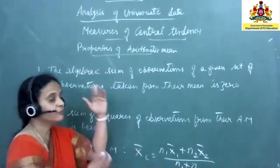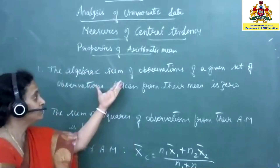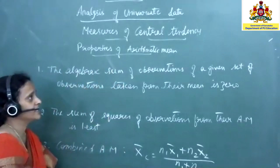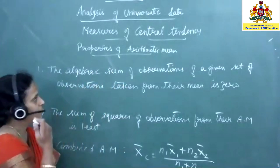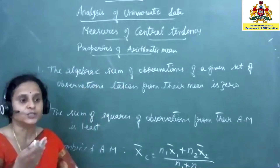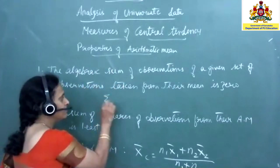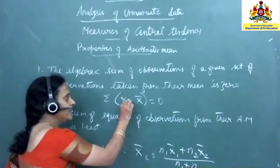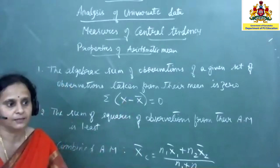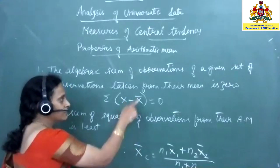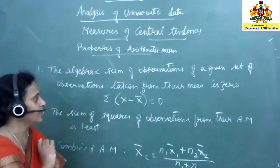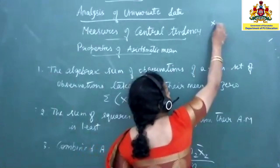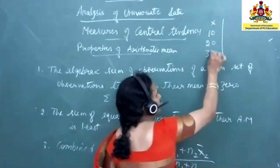Now let's look at a few properties of arithmetic mean. The very first property states that the algebraic sum of the observations of a given set taken from their mean is always zero. We write this as: Σ(x − x̄) = 0. Whenever we take the deviations — that is, subtracting each value from the arithmetic mean — and sum them all, the result is always zero.